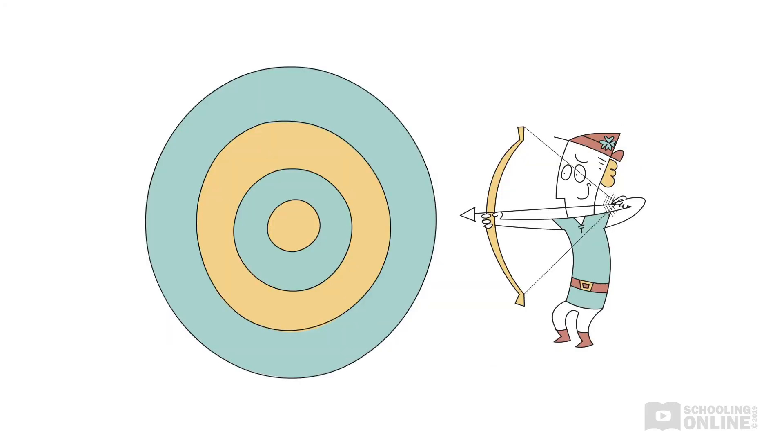On the other hand, Fluky Luke demonstrates a very large random error. His arrows might hit above, below or to the side of the target. He might hit close to the bullseye or he might miss. Fluky Luke is so unpredictable that he cannot shoot consistently. So he is not a reliable archer.